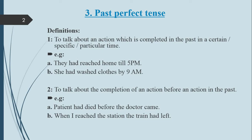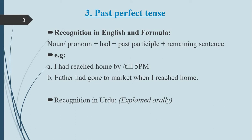Now we move to recognition in English and the formula. The formula is very simple: noun/pronoun + had + third form of the verb (past participle) + rest of the sentence. The recognition in English is: any sentence where noun/pronoun is followed by 'had' and the third form of the verb — that is past perfect tense. For example: 'I had reached home' by five p.m.